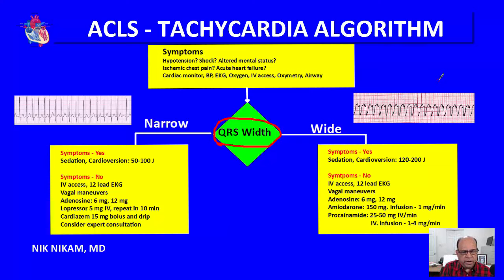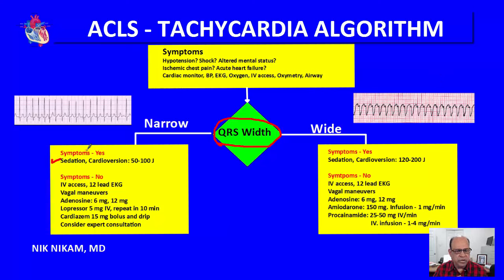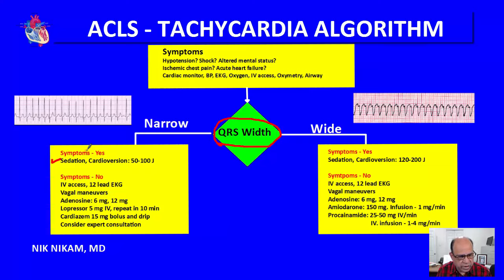For symptomatic patients with narrow QRS complex tachycardia, the best approach is to sedate the patient and perform cardioversion using 50 to 100 joules biphasic, because time is of the essence. Once cardioversion is done, look at the underlying rhythm and decide what other steps need to be taken.